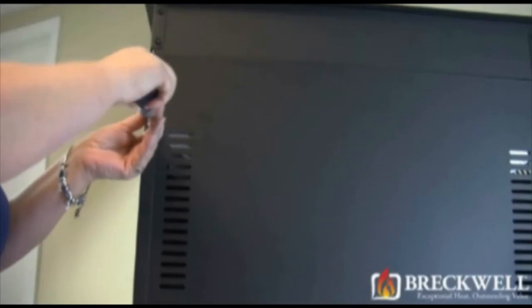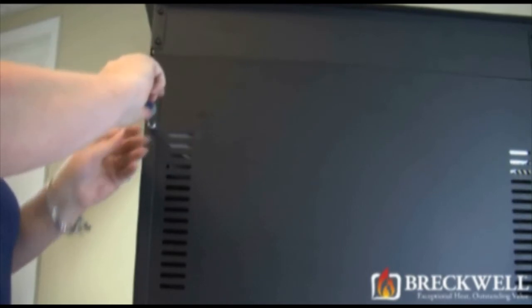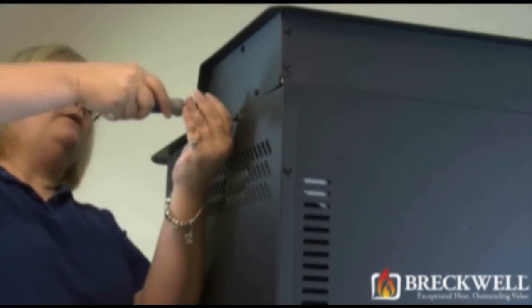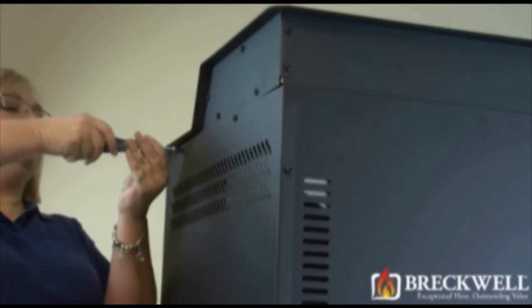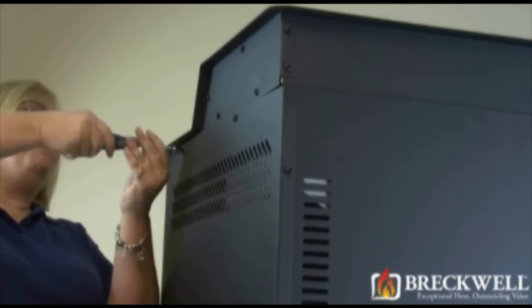To reinstall the side panel, slide the tab into the slot just behind the front of the stove. Line up the holes and then insert and tighten the four screws that you removed in step one.